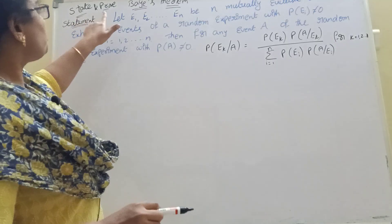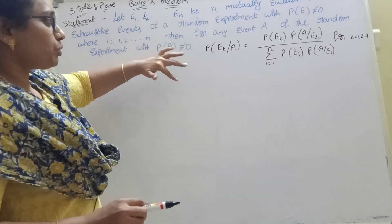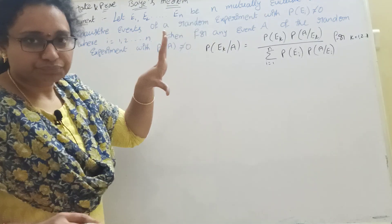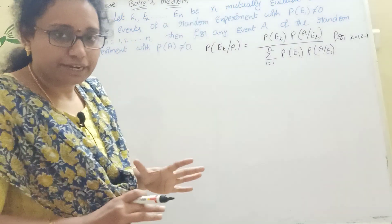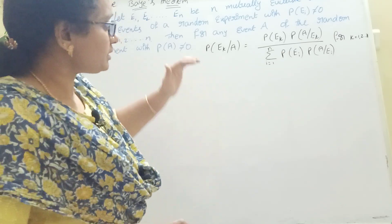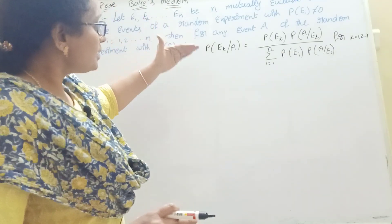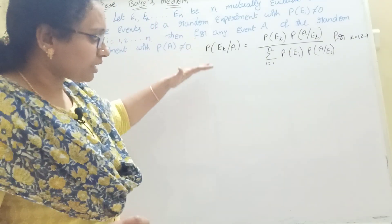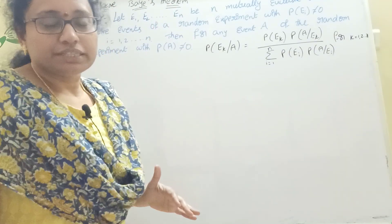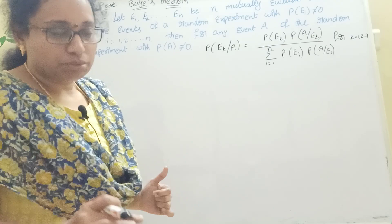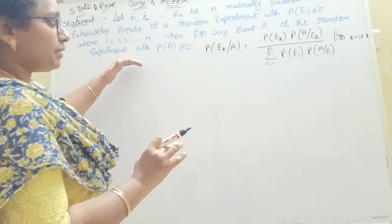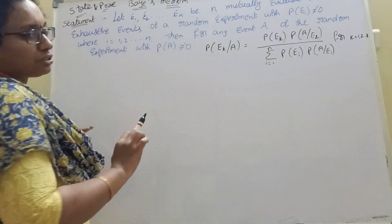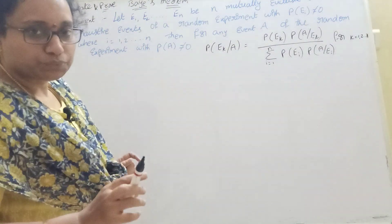Students, Bayes' theorem statement. The statement is worth 2 marks. Statement key 2 marks. Statement of the same value theorem is 3 marks. This is 3 marks. Statement is 2 marks. This is the question.